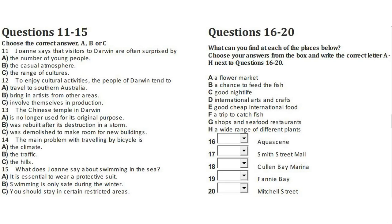You now have some time to look at questions 16 to 20 on page 68. Now listen and answer questions 16 to 20. So which places would you specially recommend? Well, one of the most popular attractions is called Aquacene. What happens is every day at high tide, hundreds of fish come in from the sea — all different sorts, including some really big deep sea fish — and some of them will even take food from your hand. It's right in the middle of town at the end of the esplanade. It's not free — I think you have to pay about $5 — but it's definitely something you have to experience.